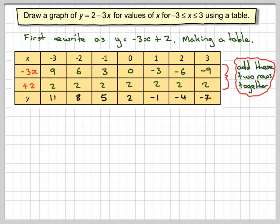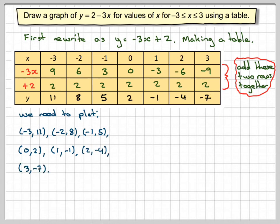Now I'm going to plot the points: minus 3, 11; minus 2, 8; minus 1, 5; 0, 2; 1, minus 1; 2, minus 4; and then 3, minus 7. I'm going to plot these points onto a suitable set of axes.